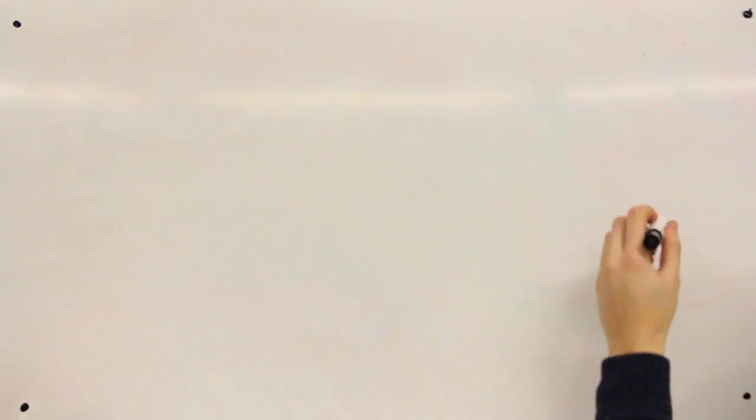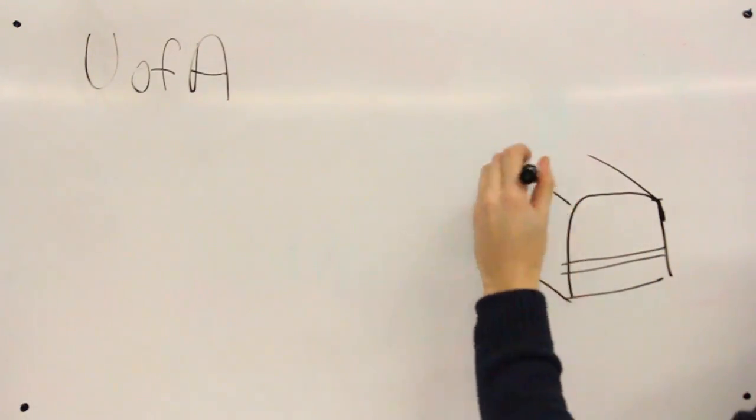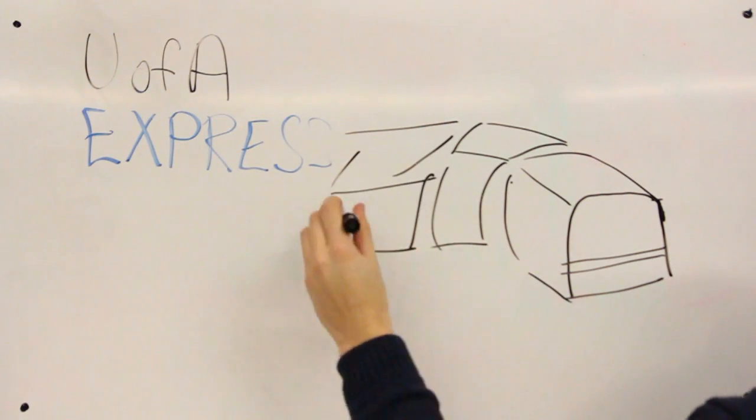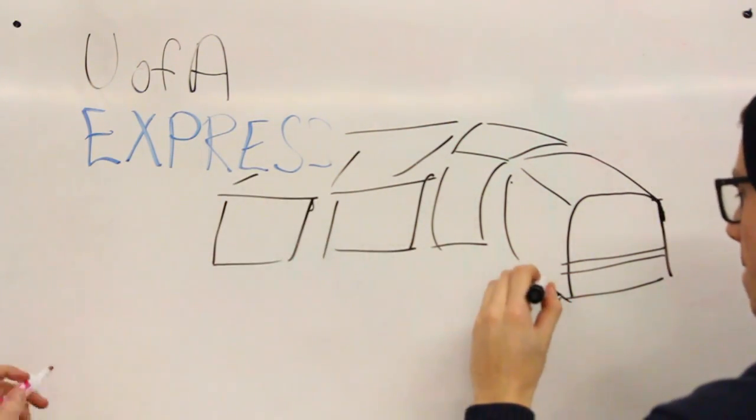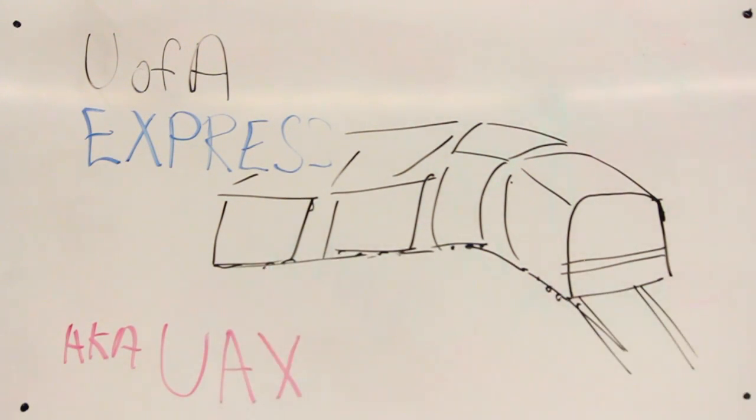The University of Alberta Express, or UAX for short, Orientation Leaders work with mature, transfer, and exchange students who come from a variety of different demographics, former institutions, and countries. They work directly with two different groups of students from a specific faculty, one on Monday and one on Tuesday, to help ease their transition into university by guiding tours, leading activities, and answering focused questions.